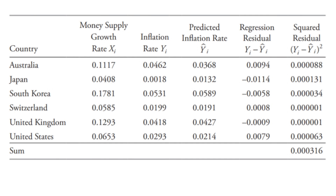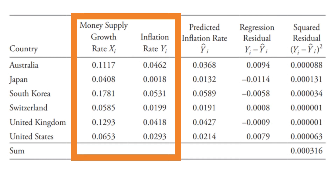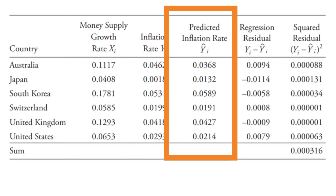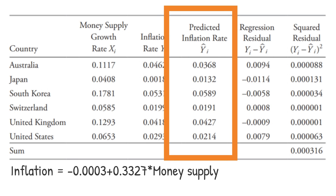Let's continue our example of predicting inflation based on money supply. The first and second columns of numbers in the table show the long-term money supply growth rates and the long-term inflation rates for six countries. The third column shows the predicted value of the dependent variable from the fitted regression line for each of the observations.